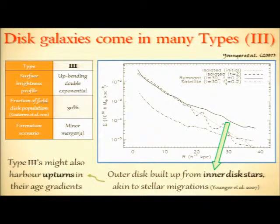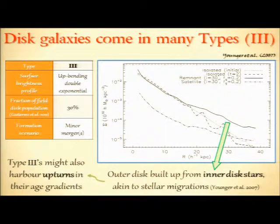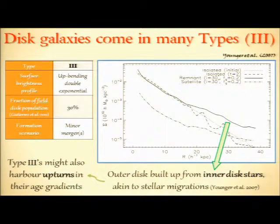Given the mechanics of this scenario, we might regard type 3s as a byproduct of stellar migrations, in which case, based on what we know about type 2 disks, we would expect to find upturns in these galaxies' age gradients as well.